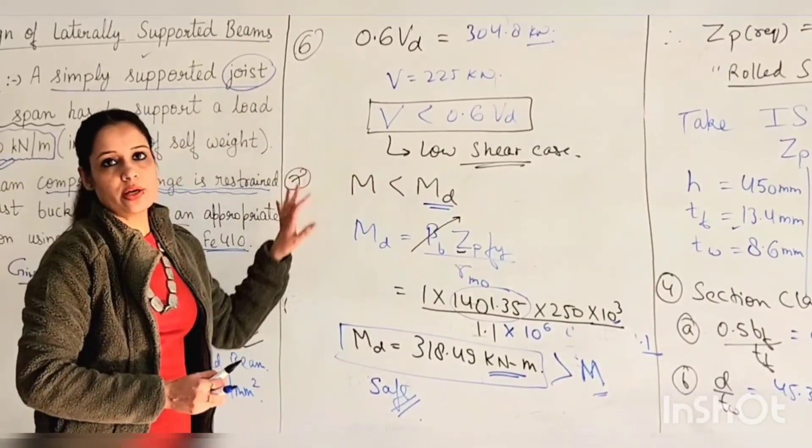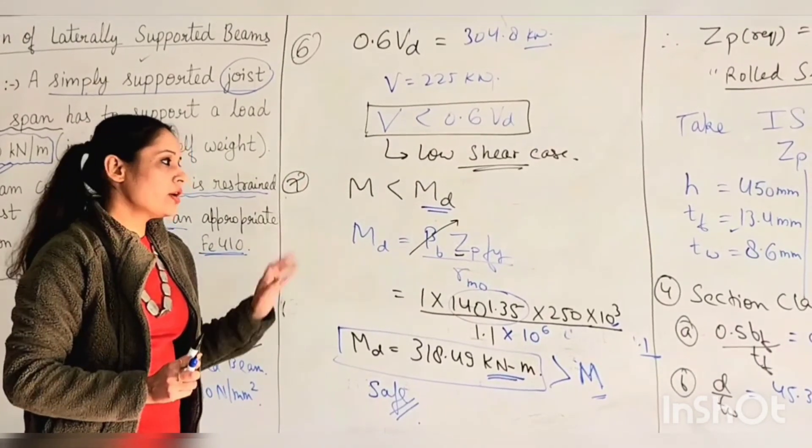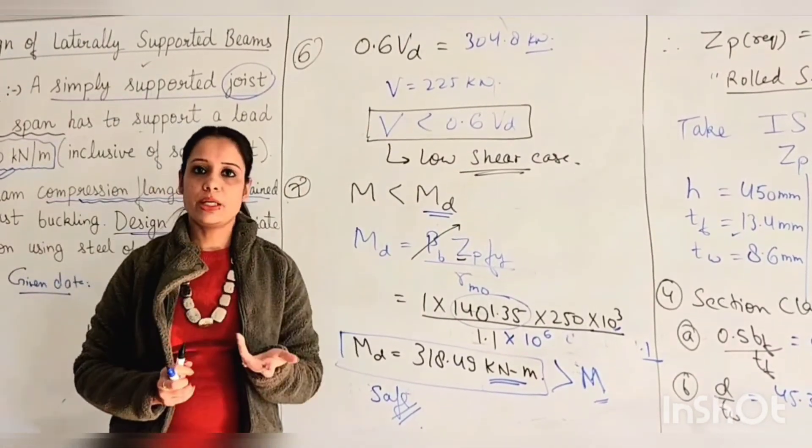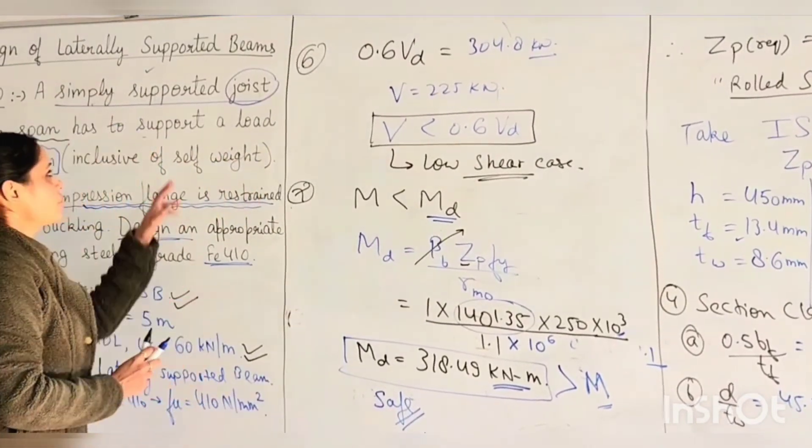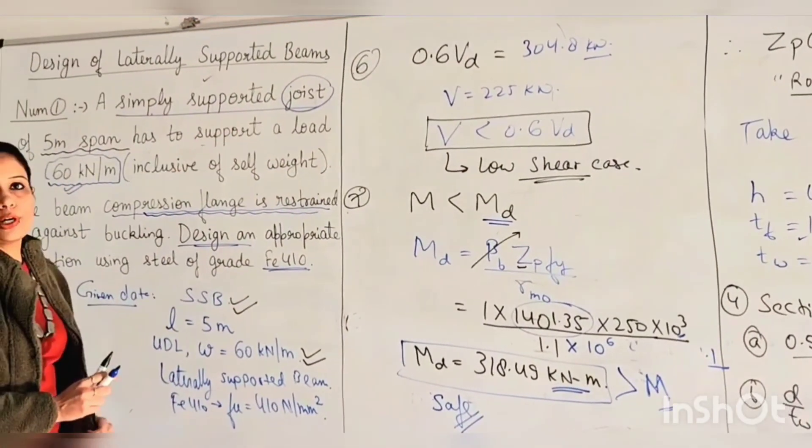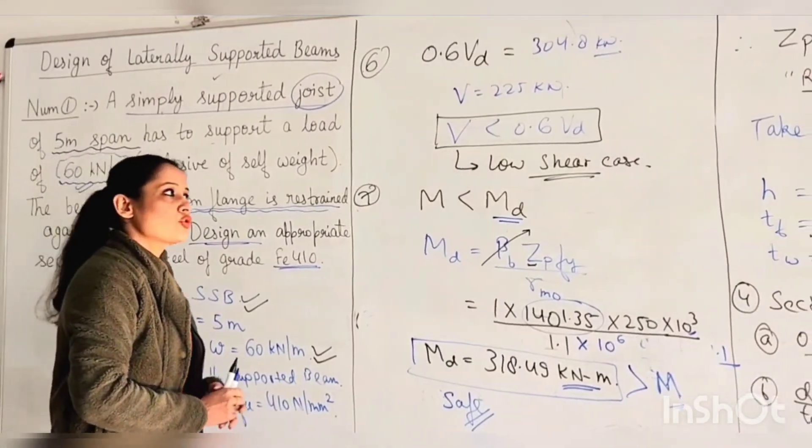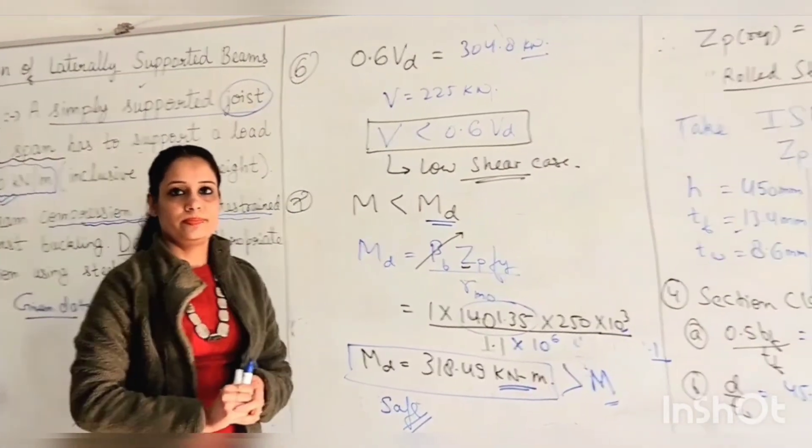So this is what we have done in this portion: shear check, high shear, low shear check, and we have checked moment. So in this way we can design beam I-sections. The condition is the beam should be a laterally supported beam. Thank you so much for watching this video.